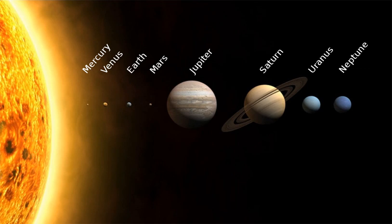Kepler's laws of planetary motion describe the orbits of objects around the Sun. Following Kepler's laws, each object travels along an ellipse with the Sun at one focus. Objects closer to the Sun, with smaller semi-major axes, travel more quickly because they are more affected by the Sun's gravity. On an elliptical orbit, a body's distance from the Sun varies over the course of its year. A body's closest approach to the Sun is called its perihelion, whereas its most distant point from the Sun is called its aphelion. The orbits of the planets are nearly circular, but many comets, asteroids, and Kuiper Belt objects follow highly elliptical orbits.